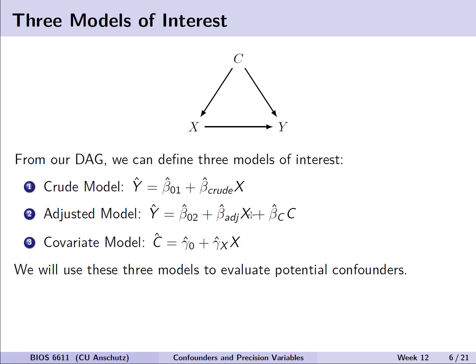From our DAG, we can define three models of interest to evaluate the potential confounder c. The first is a crude model, where we fit a regression of outcome y with just our primary explanatory variable x. In the second, the adjusted model, we have both x and c as predictors. The third is a covariate model, where we make c the outcome instead of y, but still use x as our predictor. We'll use these three models to evaluate potential confounders.